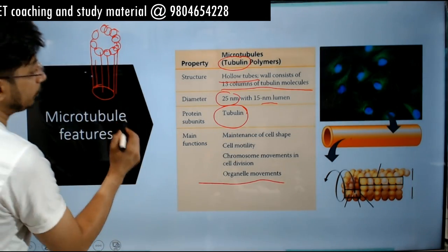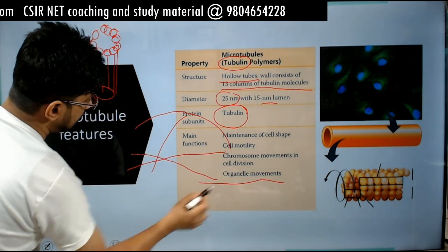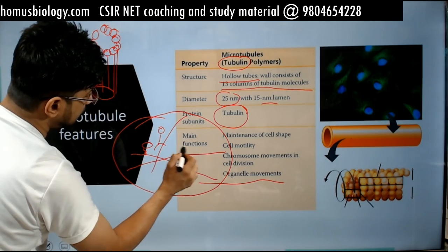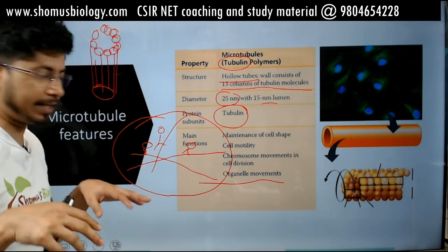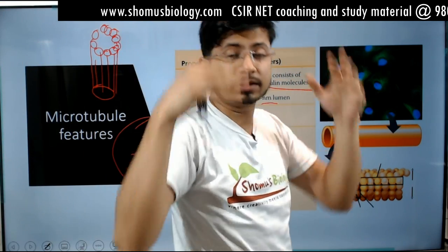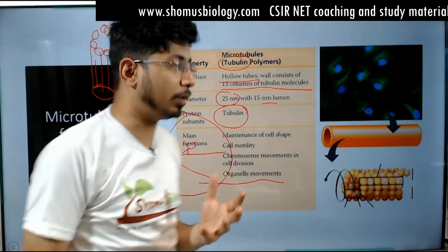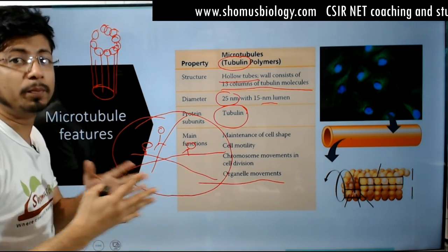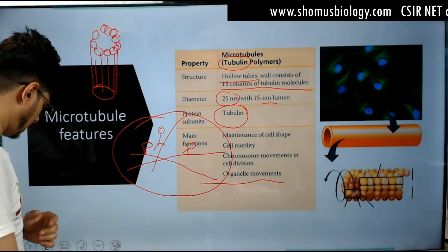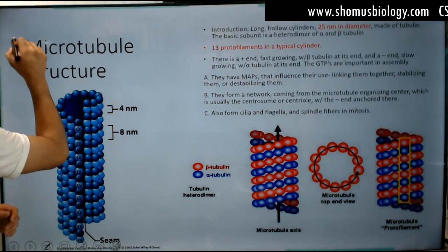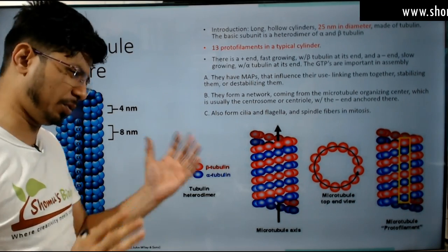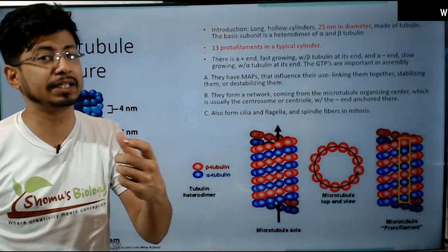Microtubules form paths inside the cell so that organelles and other cargo proteins can be transported. Motor proteins carry cargo on top and move in a molecular walk on the surface of the microtubule path — that is why we call it helping organelle movement or cargo movement. We do not call microtubules filaments because they are thicker — the thickest among the cytoskeleton elements.